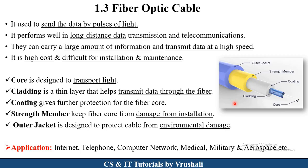Looking at the structure of a fiber optic cable: the first part is the core, which is designed to transfer information in the form of light. Next is the cladding, which provides protection to the core for sending information. Next is the coating, which gives complete protection to the fiber optic cable. Next is the strength member, which provides protection from damage at the time of installation. Finally, there is the outer jacket, which provides protection from environmental damage such as heat or cold.